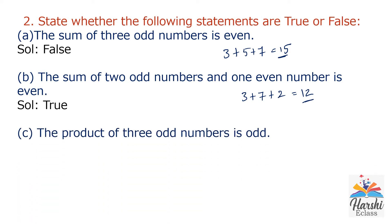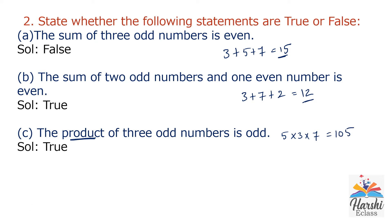Statement C: The product of three odd numbers is odd. Product means multiplication. Multiply any three odd numbers: 5, 3, and 7. 5 times 3 is 15, and 15 times 7 is 105, which is an odd number. So it is true.